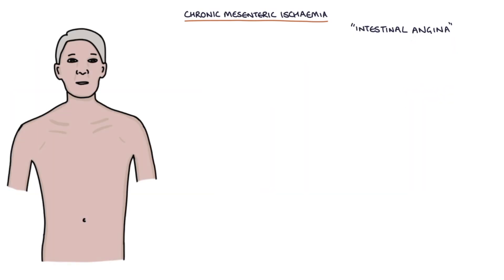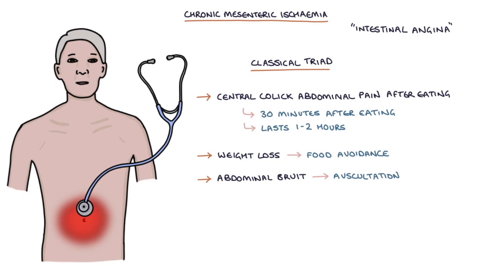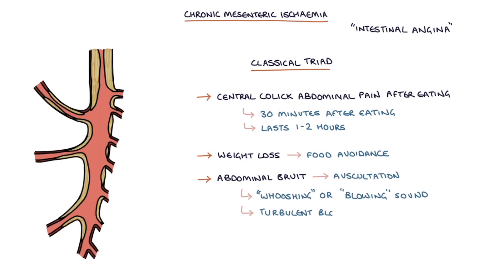The typical presentation of chronic mesenteric ischemia is with a classical triad of central colicky abdominal pain after eating which usually starts around 30 minutes after eating and lasts for 1-2 hours, weight loss which is due to food avoidance because food causes pain, and an abdominal bruit which may be heard on auscultation. A bruit is a whooshing or blowing sound that's caused by turbulent blood flow through the narrow abnormal vessels.